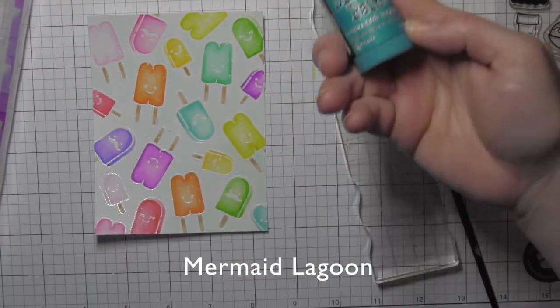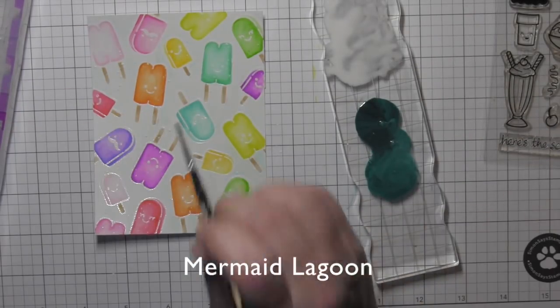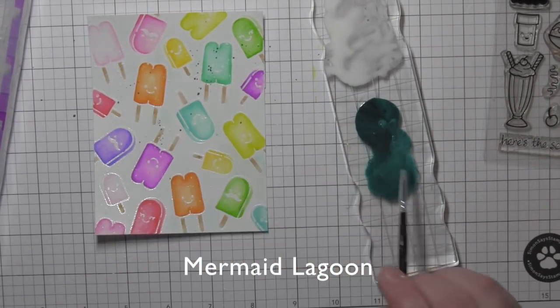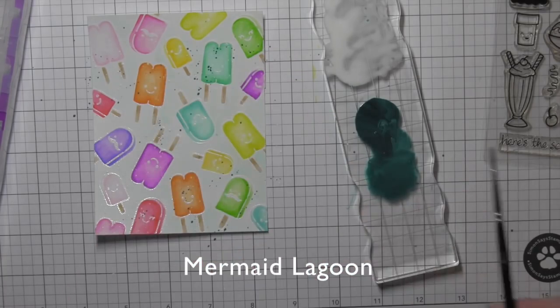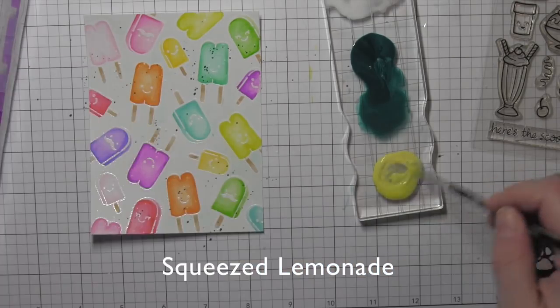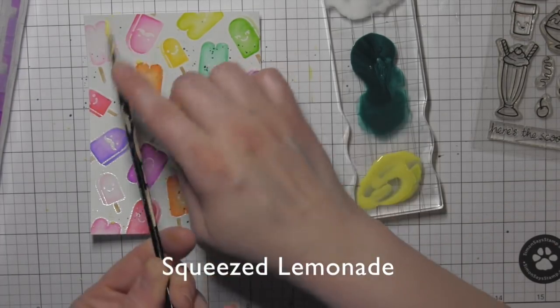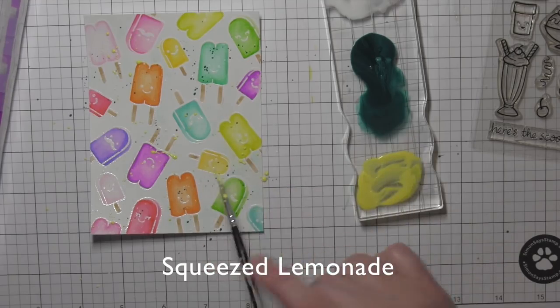Then I'm going to take some Mermaid Lagoon and again water that down with water, and then I'm going to pick that up and make splatters all over the background with it, and even a little Squeezed Lemonade the same thing. The smaller the paint brush, the smaller the splatters you're going to get. Water it down for the paint to maybe not be quite as opaque.